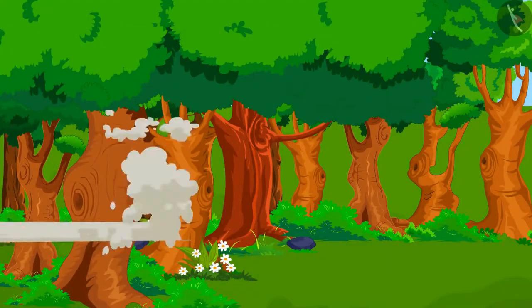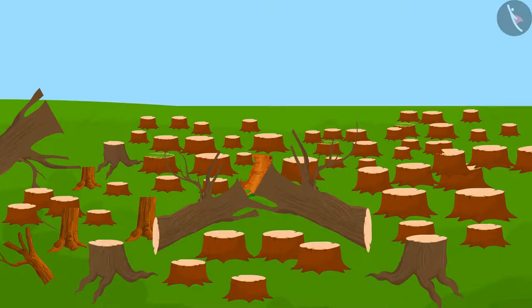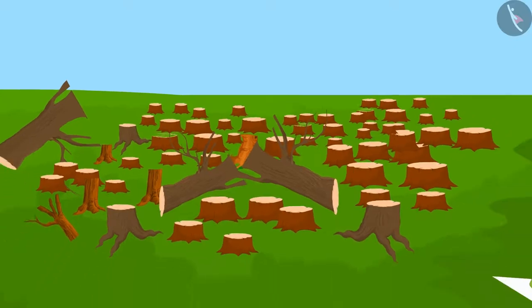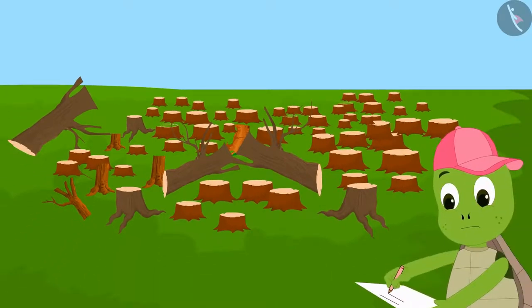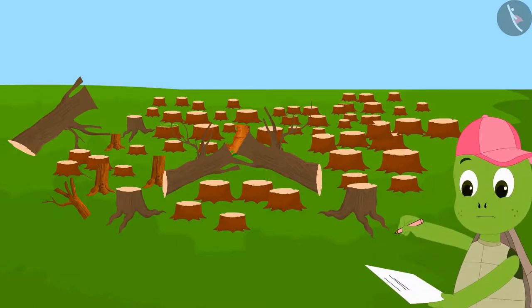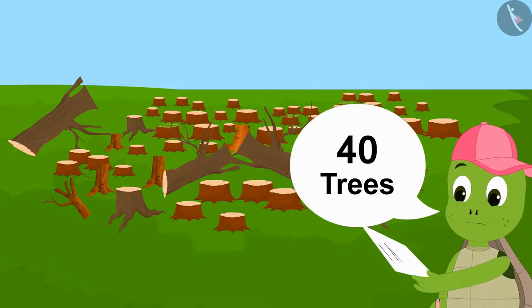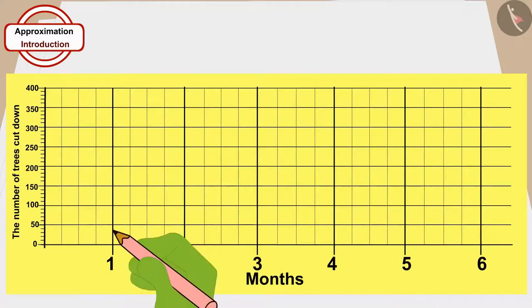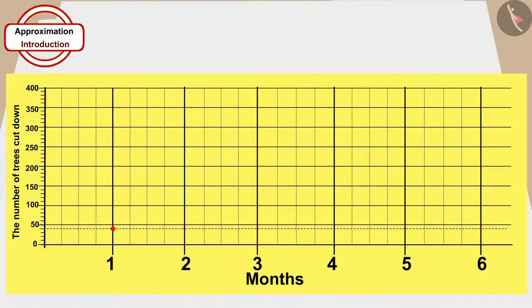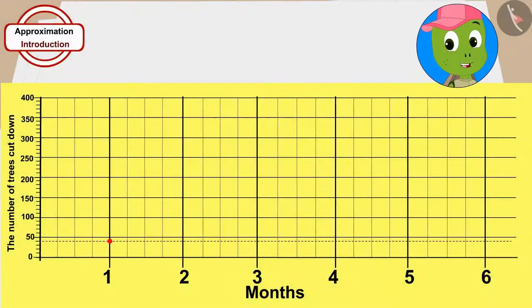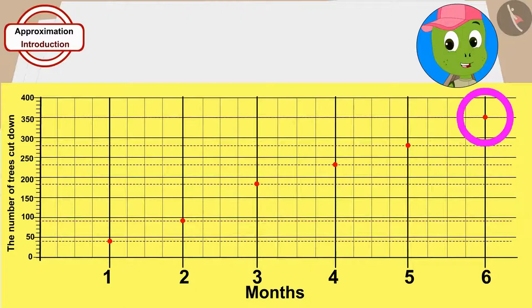A month passed and trees were still getting cut in the village. By the end of the month, he added the total number of trees cut down. A total number of trees were cut this month. Let me show this by making a dot on this paper. At the end of each month, Tufan counted the number of trees cut and recorded this on the paper.